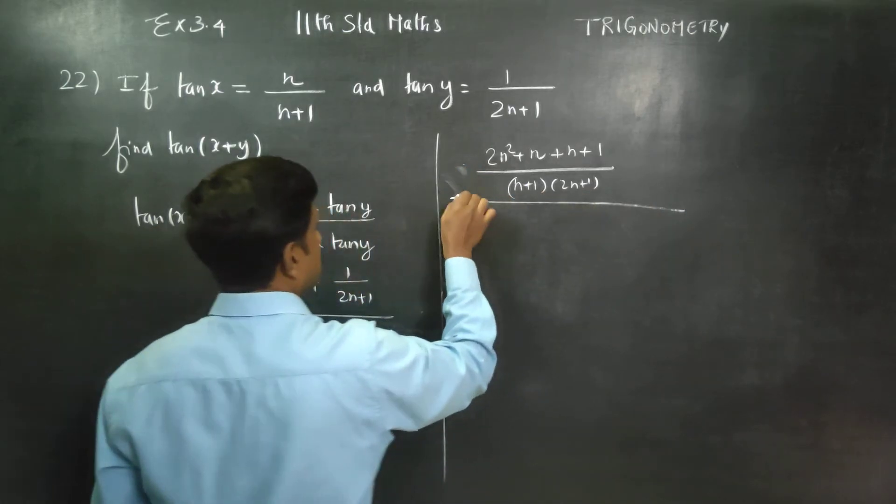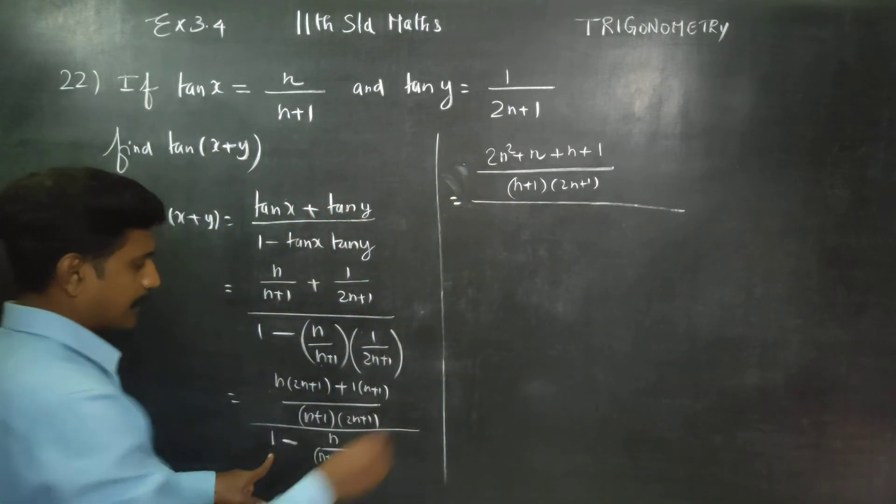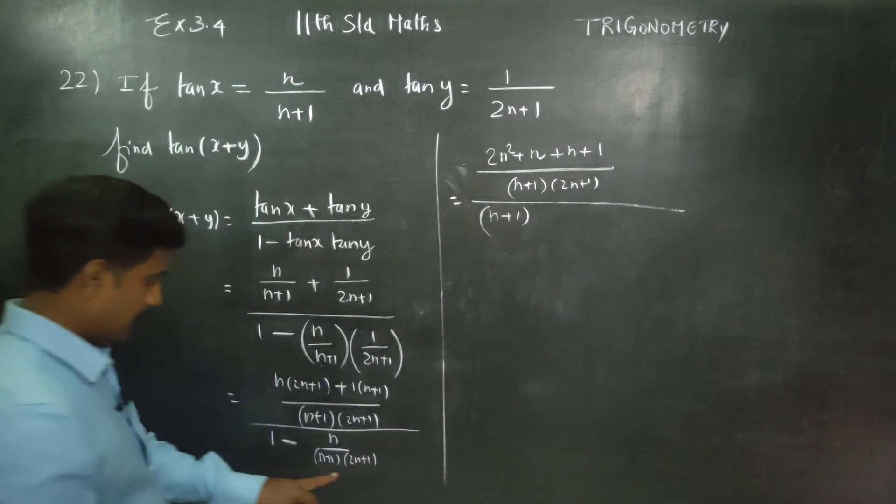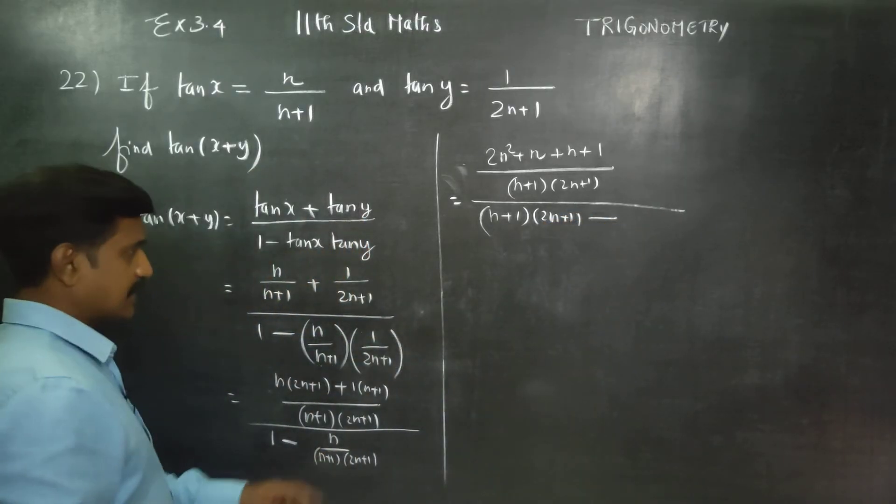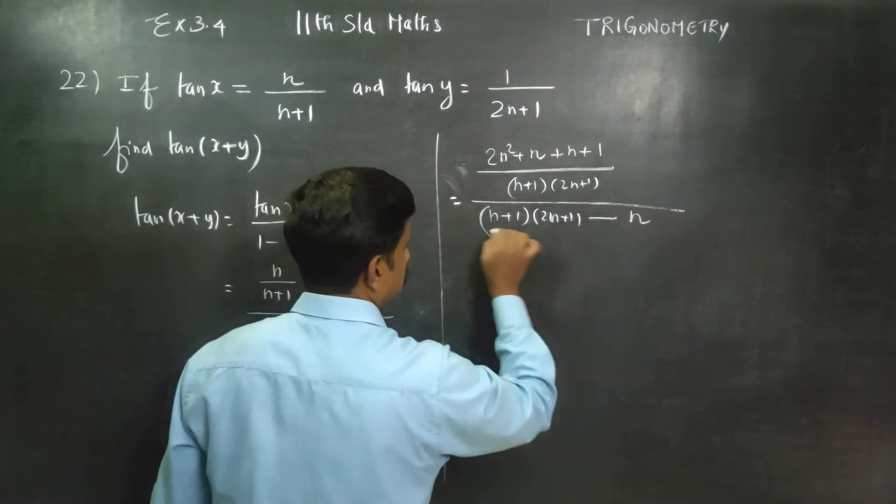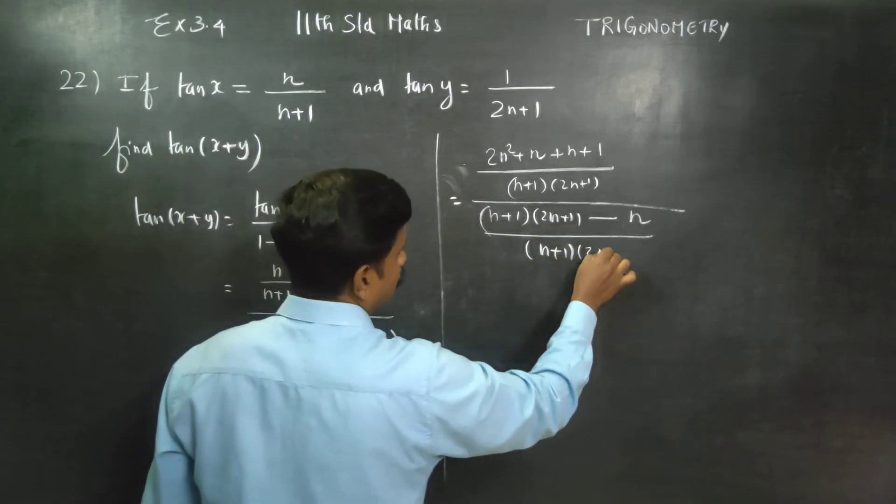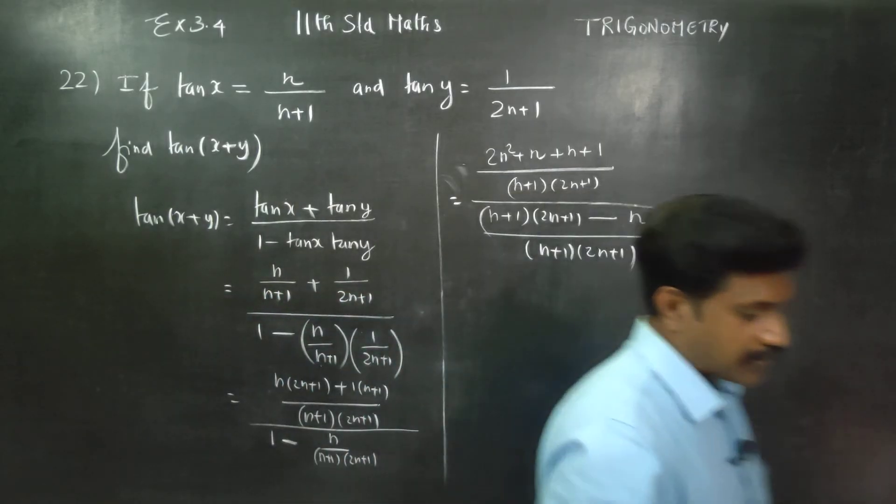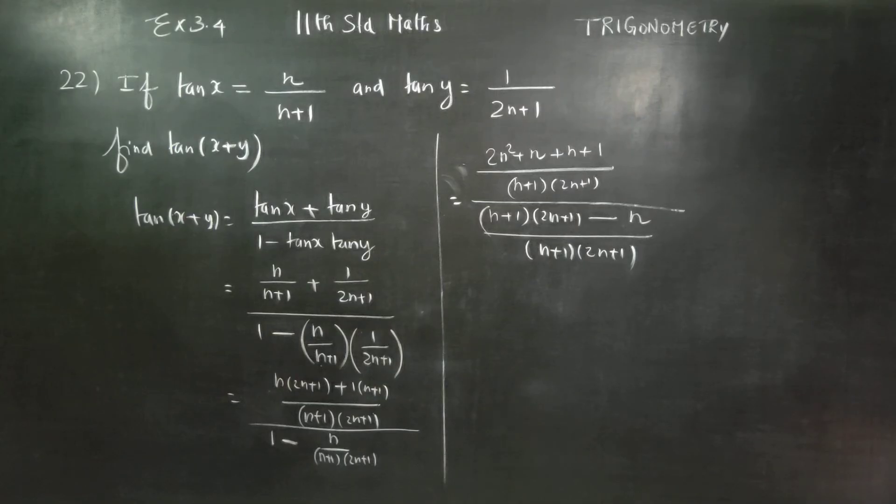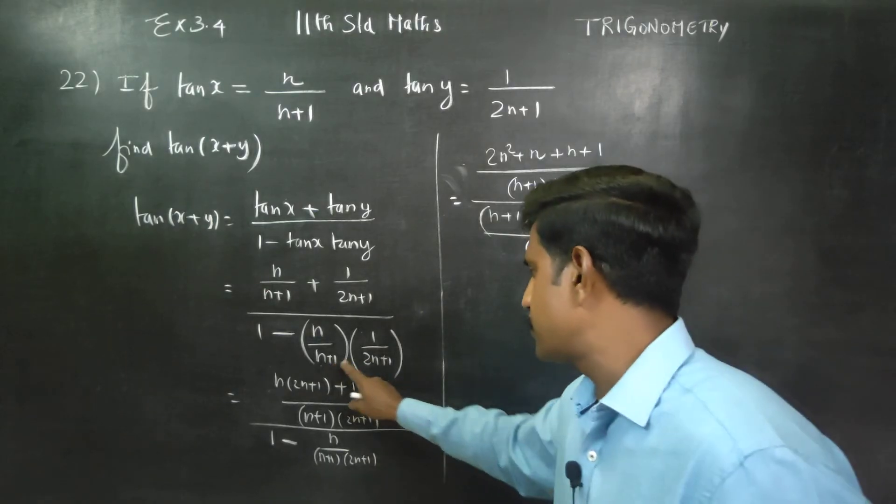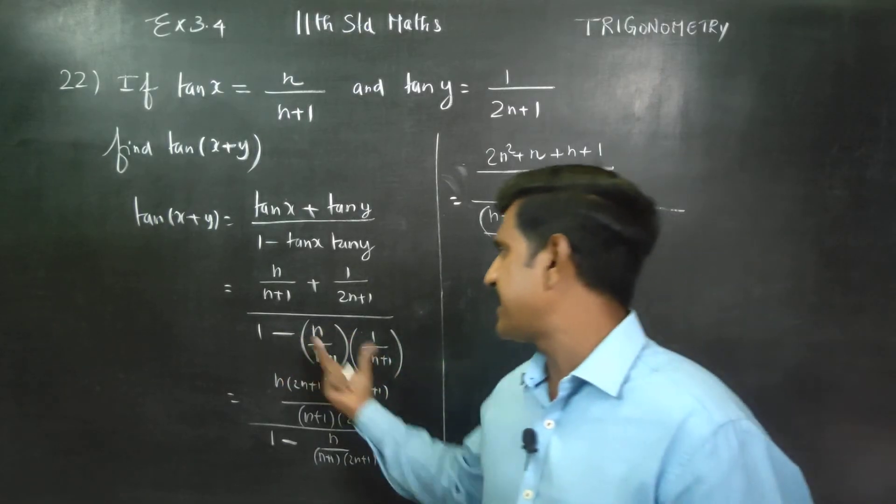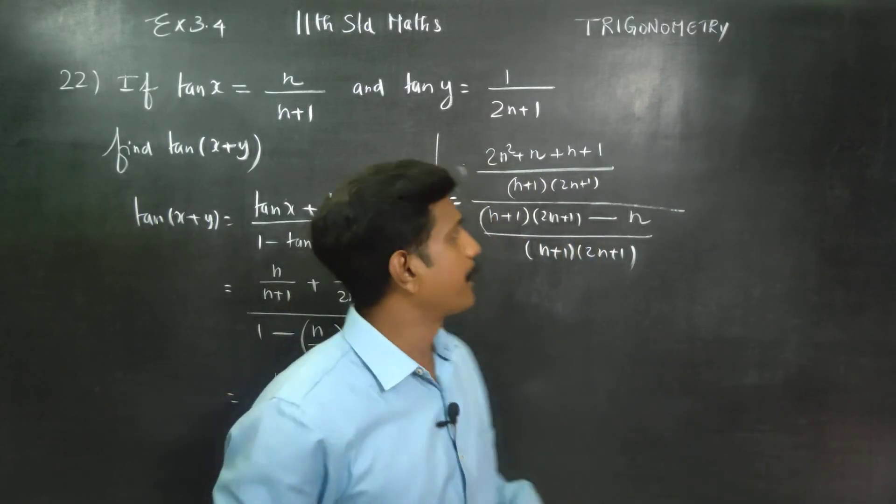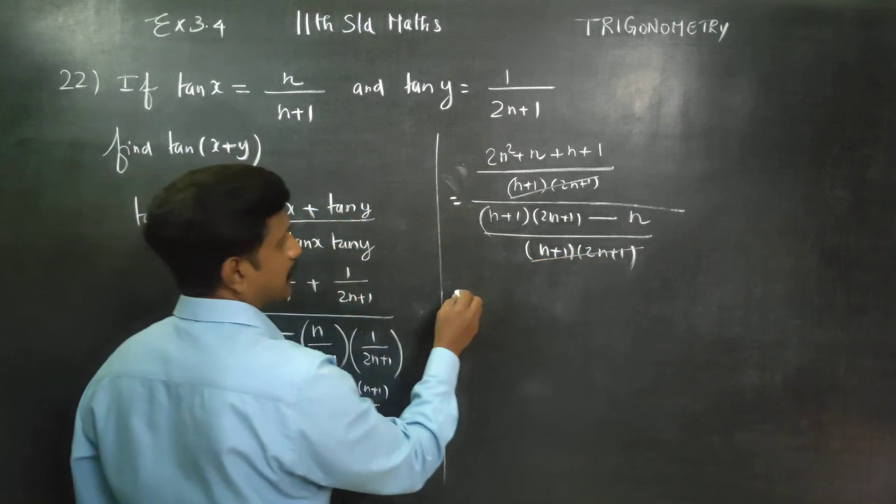Divided by n, open the brackets: (n+1). Below, cross multiply these two products: (n+1) into (2n+1). Here is 1 minus, so cross multiply. The denominator is the same, so cancel it.